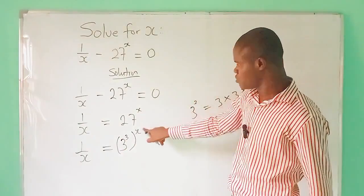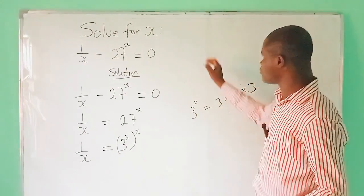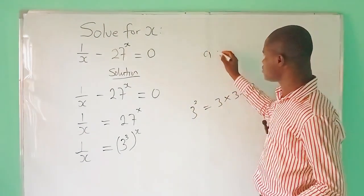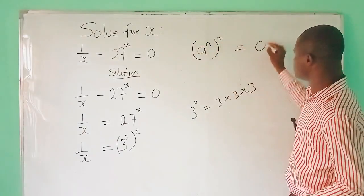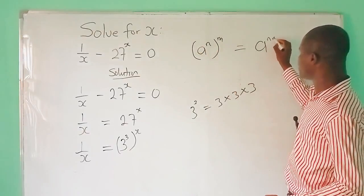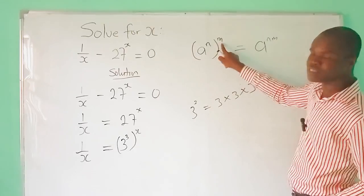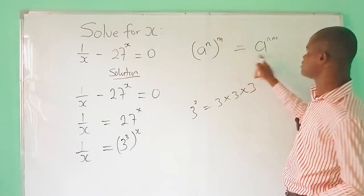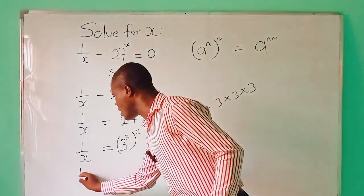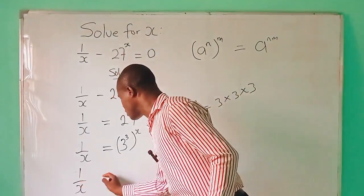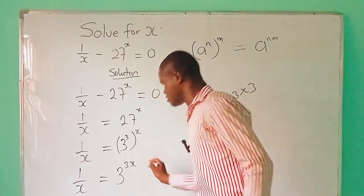Now I am going to write 27 as 3 raised to the power 3, raised to the power x. The x that was here, you still bring it back. In indices, when you have a raised to the power n bracket m, this is the same as a raised to the power n times m — that is the power law: use the power outside to multiply the power inside. Applying it here, this becomes 1 over x is equal to 3 raised to the power 3x.